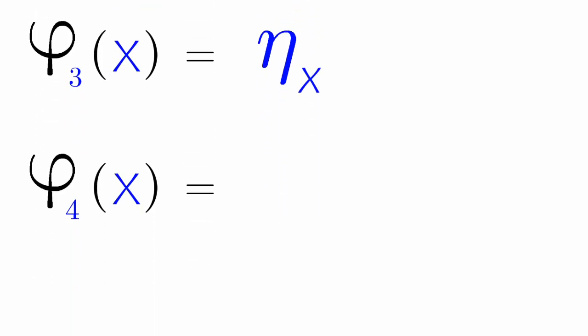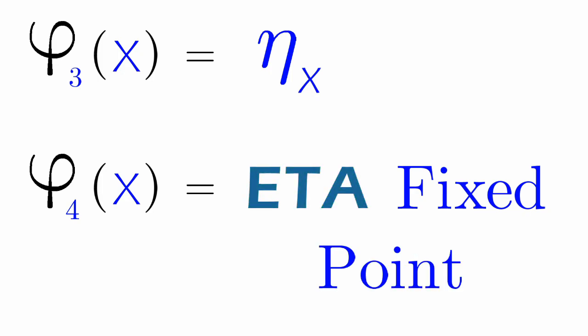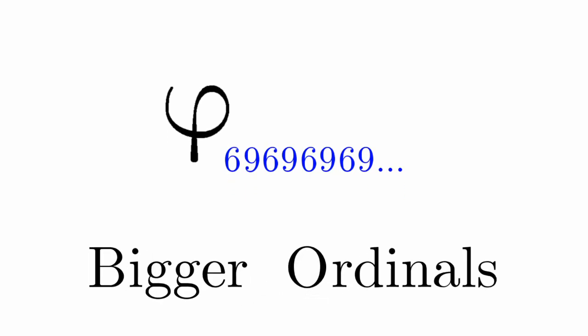Phi 4, that's an infinite nesting of Eta's. This is also called the Eta Fixed Point. We can keep increasing the index of Phi. This way, we are effortlessly creating bigger ordinals.